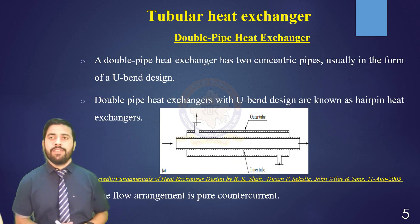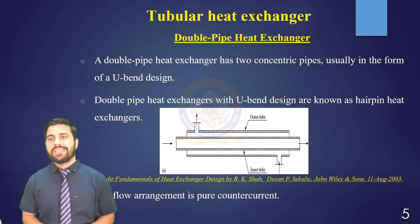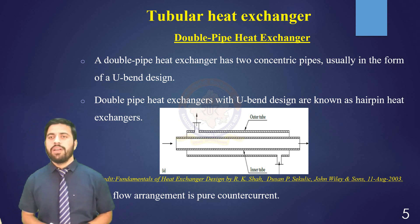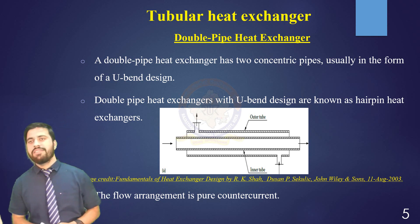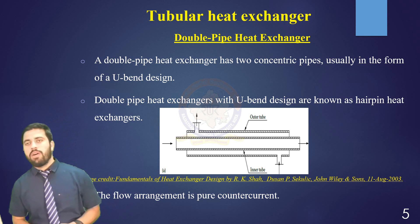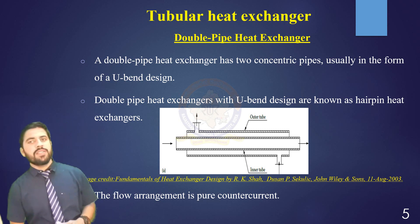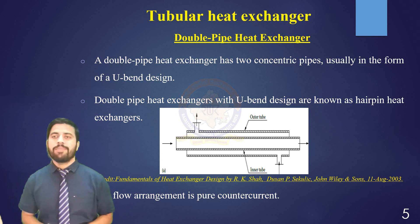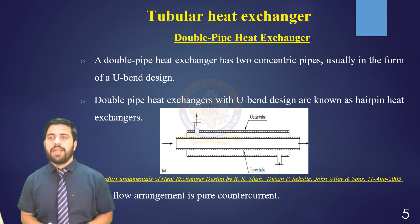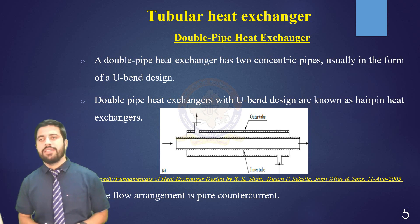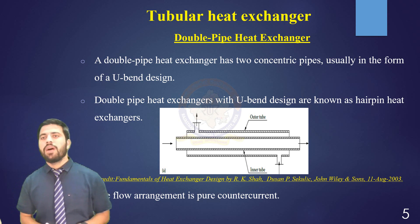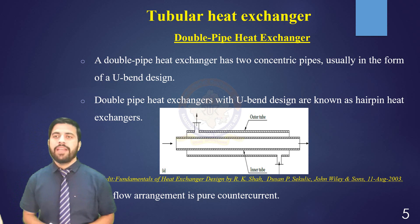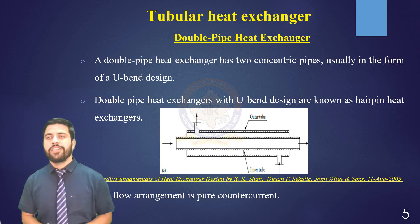Coming to the first category of classification, which is according to the basis of construction: heat exchangers are classified as tubular heat exchangers, which include double pipe, shell and tube, and boiler tube heat exchangers; plate type heat exchangers; and extended surface heat exchangers like tube-fin or plate-fin heat exchangers. A double pipe heat exchanger has two concentric pipes, usually in the form of a U-bend design. Double pipe heat exchangers with U-bend design are known as hairpin heat exchangers. The flow arrangement in this type is pure counter current, and they are suitable for small duties, high pressures, and temperatures.